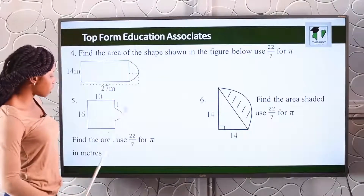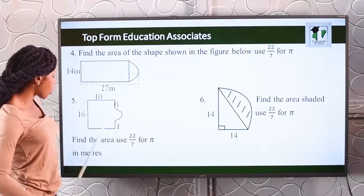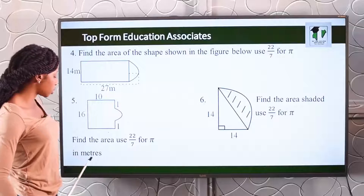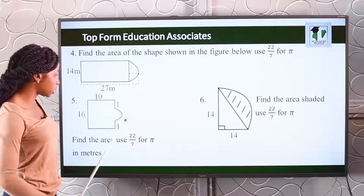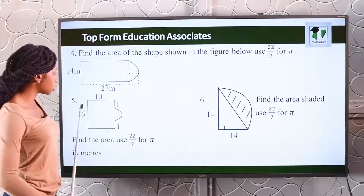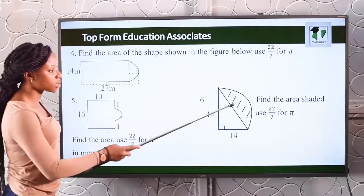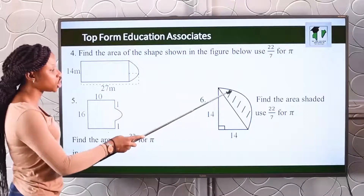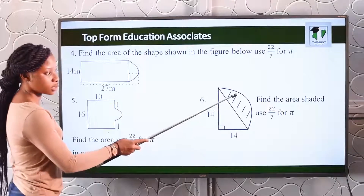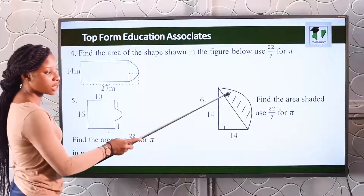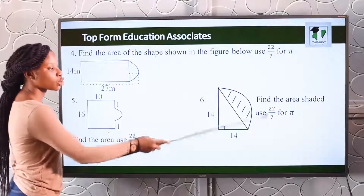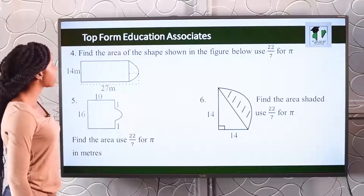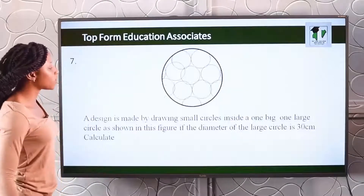Number five: find the area of this shape in meters. Number six: find the area of the shaded part, using 22 over 7 for pi.